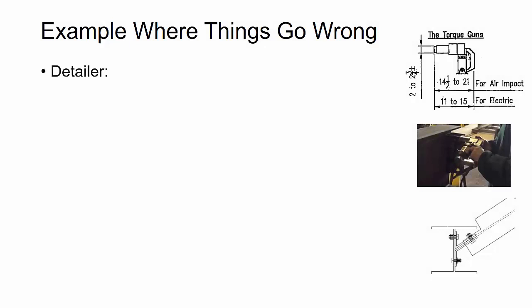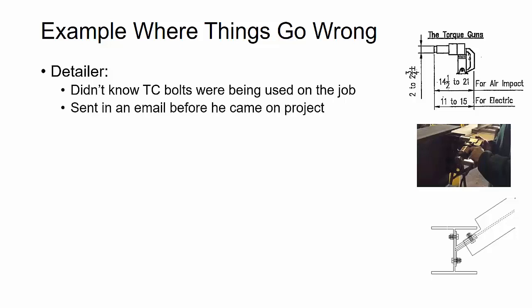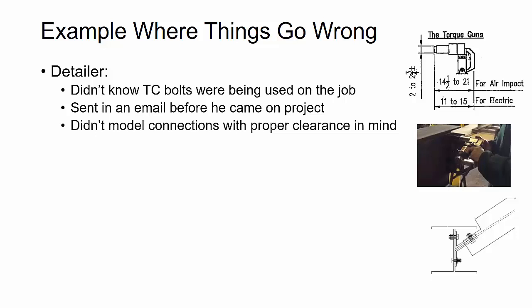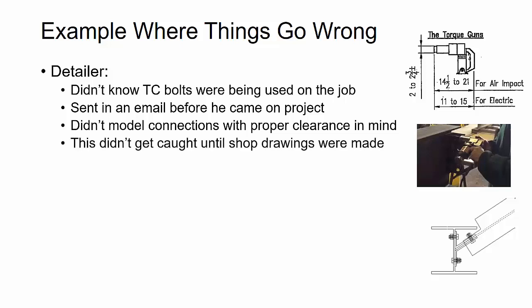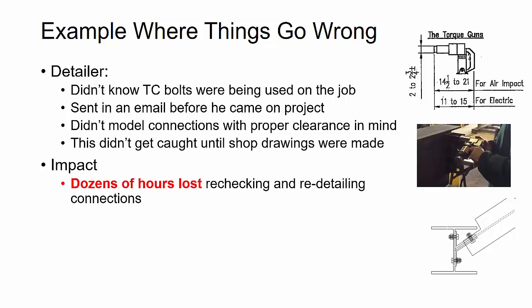Let's look at an example of where things can go wrong from poor information flow. A detailer on a project didn't know that TC bolts — tension control bolts — were being used on the job. Instead, he modeled all his connections based on normal heavy hex high-strength bolts. The lead detailer had sent out an email, but it was sent before this detailer came on board. So the detailer modeled all those connections without the proper clearance for a torque gun for TC bolt installation. This didn't get caught until shop drawings were made and the checker noticed the detailer wasn't using TC bolts.